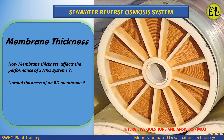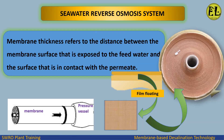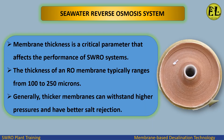Membrane thickness refers to the distance between the membrane surface exposed to the feed water and the surface in contact with the permeate. Membrane thickness is a critical parameter that affects the performance of SWRO systems. The thickness of an RO membrane typically ranges from 100 to 250 microns.